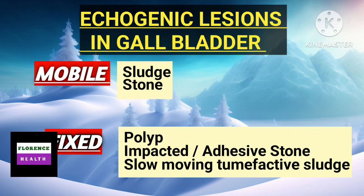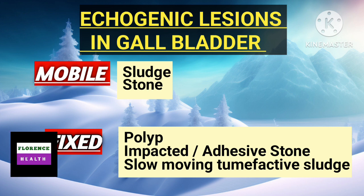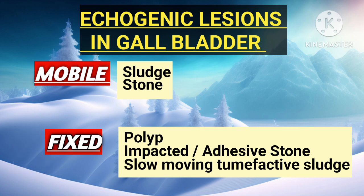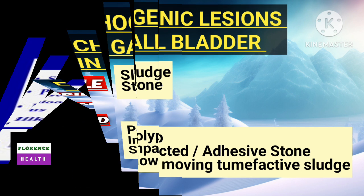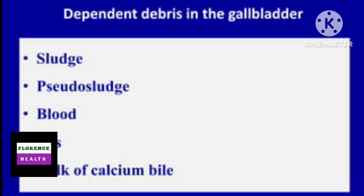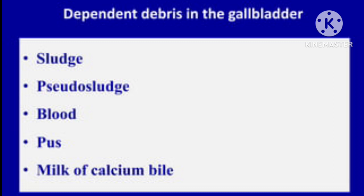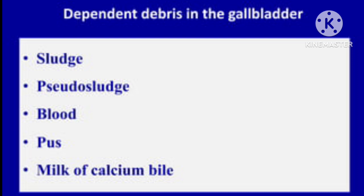Mobile echogenic lesions inside the gallbladder include sludge and stone. Fixed or immobile echogenic lesions include polyp, impacted or adhesive stone, and slow-moving tumefactive sludge. Other mobile lesions inside the gallbladder include sludge, pseudo-sludge, blood inside the gallbladder, pus inside the gallbladder, and milk of calcium bile. These lesions move to the dependent part of the gallbladder on changing the patient's position.